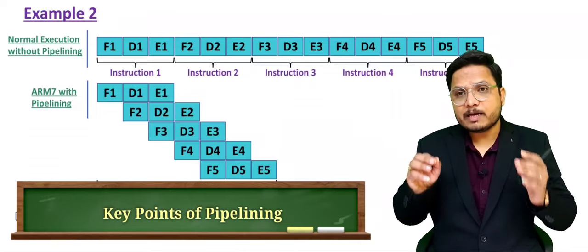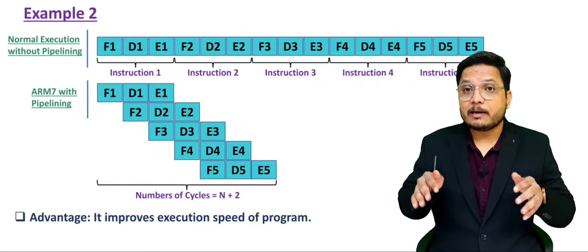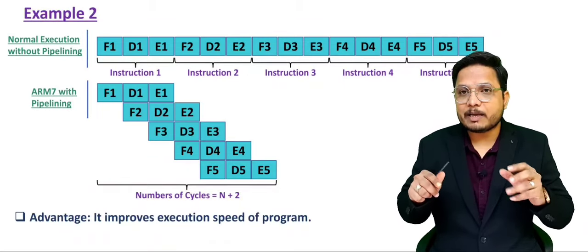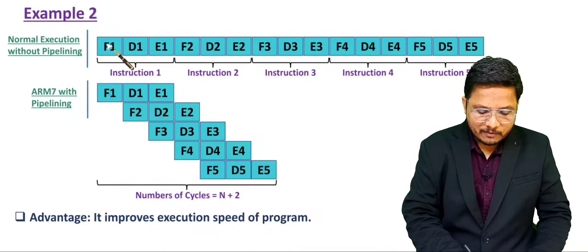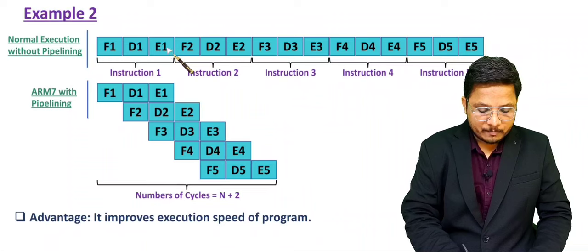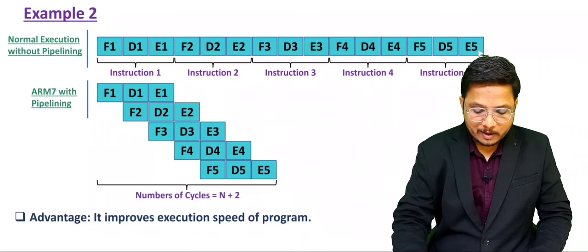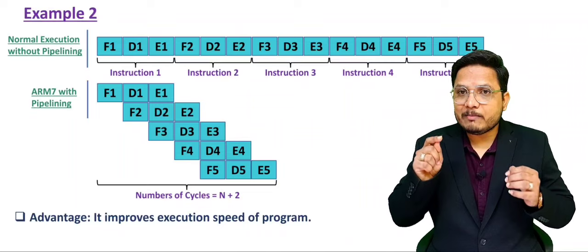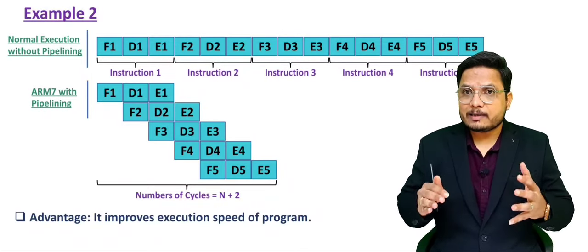The basic fundamental here is that we are keeping all the units of the CPU busy, and because all the units are busy in parallel, the execution speed is getting boosted. When fetch is happening, the decode and execute units are free; when decode is happening, the fetch and execute units are free; when execute is happening, the fetch and decode units are free — sequential execution keeps only one unit busy at a time. But with pipelining, all units are kept busy simultaneously.